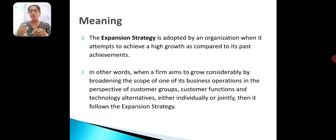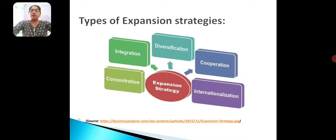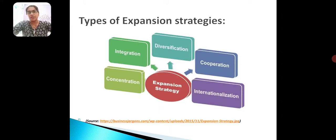So let's see what are the different strategies followed when a company wants to go for expansion or growth. The expansion strategies could be any of these 5 types: concentration, integration, diversification, cooperation, or internationalization. In this session, we will talk about the first three — concentration, integration, and diversification. The remaining 2 will be discussed in the next session.